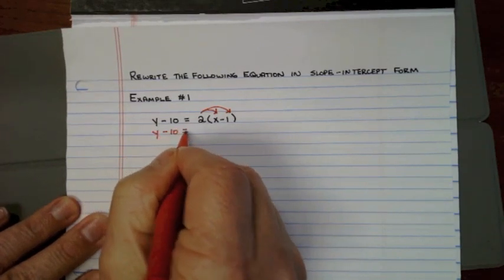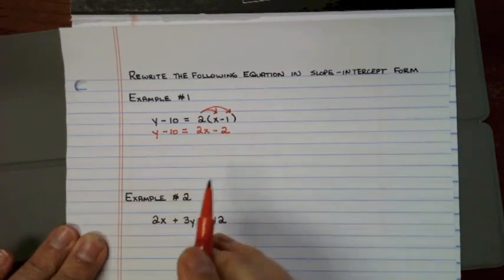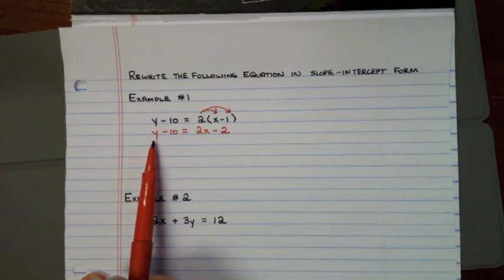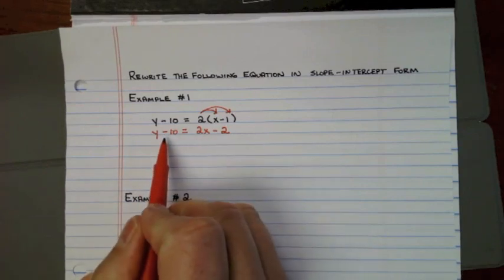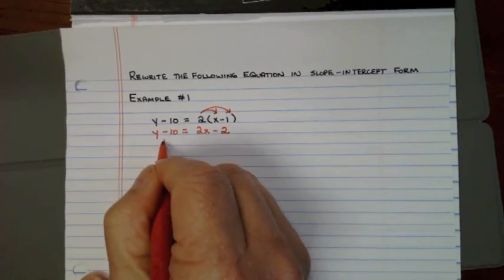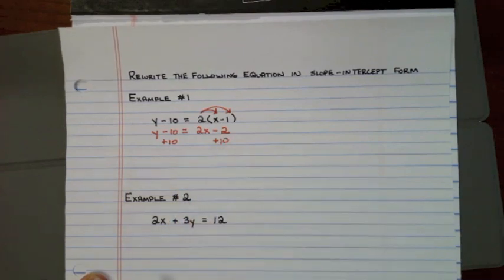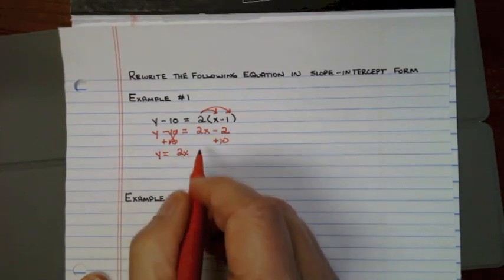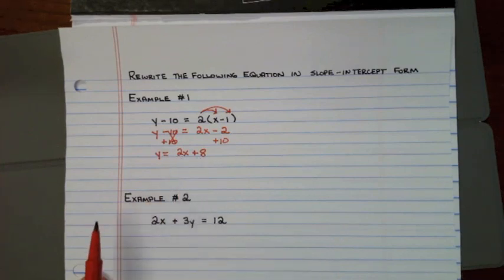Y minus 10 equals 2X, and 2 times negative 1 is negative 2. To get Y by itself, I need to get rid of the negative 10. The opposite of negative 10 is positive 10, so I add 10 to both sides. That cancels out, leaving Y = 2X, and negative 2 plus 10 is positive 8. Y = 2X + 8 is in slope-intercept form — there's the slope in front of X and the Y-intercept on the end.